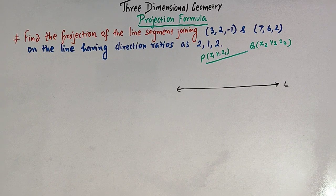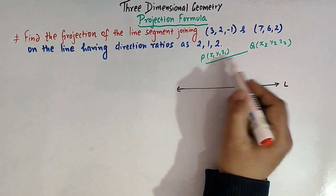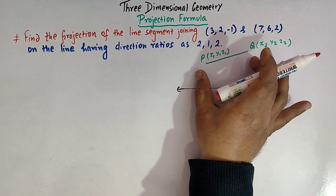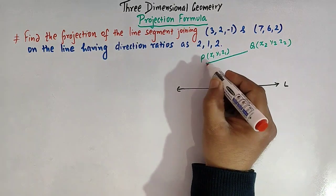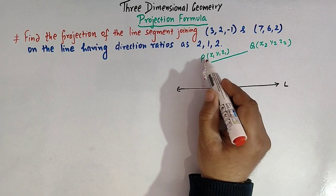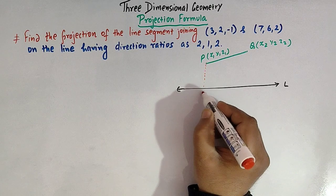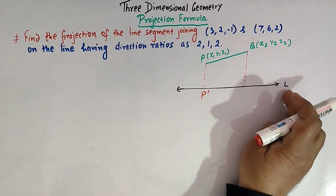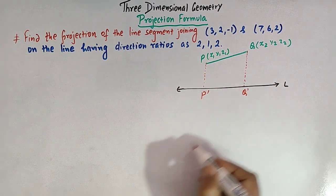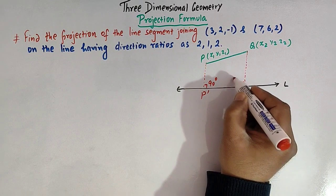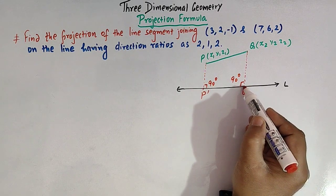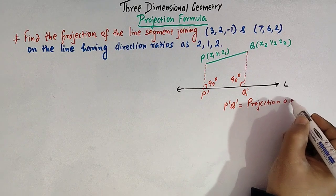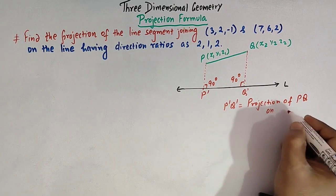Now suppose we wish to find out the projection of this line segment on line L — in other words, the shadow of line segment PQ on line L. We draw perpendiculars: we drop a perpendicular from point P to line L, with foot P prime, and similarly from Q, with foot Q prime. Both angles are 90 degrees. So the length P prime Q prime is known as the projection of line segment PQ on line L.